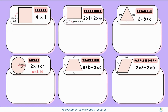Now let's have a look at some examples. For a square with a length of 6, since the formula is 4 times the length, we have 4 times 6 gives us 24, so the perimeter is 24 centimeters.